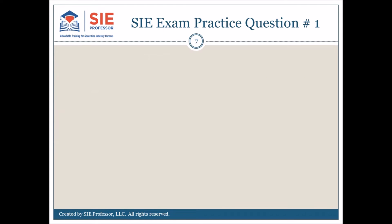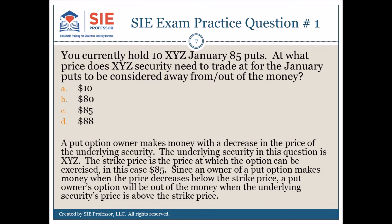SIE exam practice question number 1 answer. A put option owner makes money with a decrease in the price of the underlying security. The underlying security in this question is XYZ. The strike price is the price at which the option can be exercised — in this case, $85. Since an owner of a put option makes money when the price decreases below the strike price, a put owner's option will be out of the money when the underlying security's price is above the strike price. The answer is D.